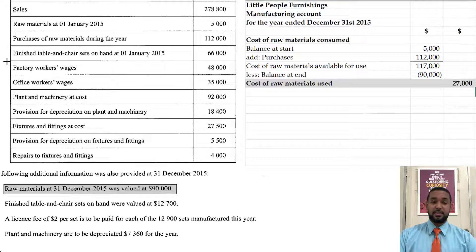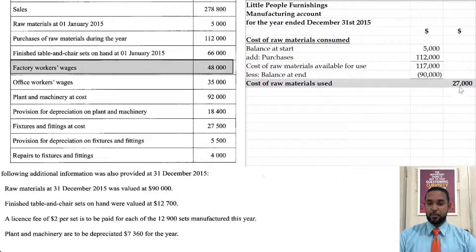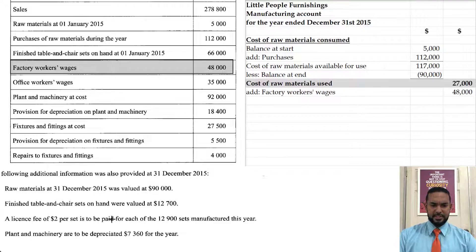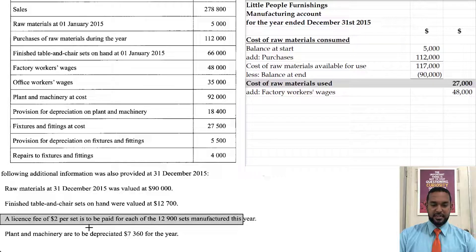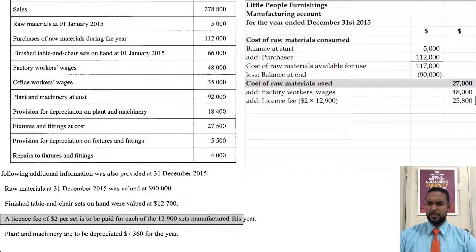What else goes in the prime cost section? Factory workers' wages — those are direct wages. And don't forget the license fee of $2 per set for 12,900 sets, so that's going to be $25,800. If we total those three figures, we're going to get the total prime cost.